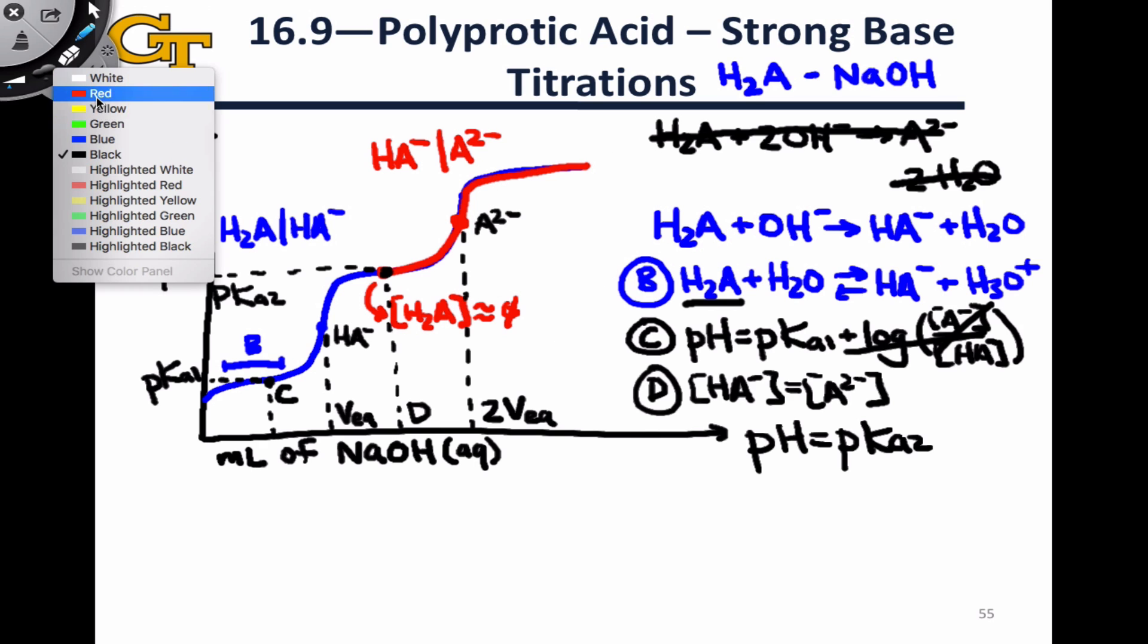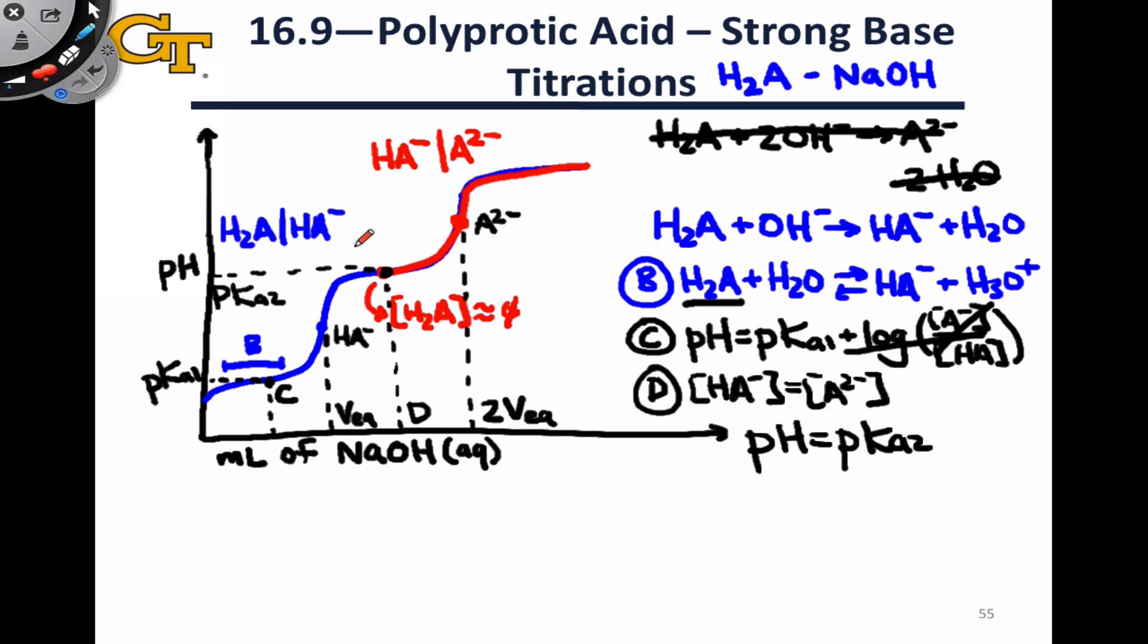One thing that I want to back up and mention briefly is that in this region that looks like a second buffer region, which it absolutely is, let's call it B2 for the second buffer region, in the B2 region, we're dealing with a buffer, but now the reaction is different. We're talking about acid dissociation of the second proton, acid dissociation of the conjugate base to form still hydronium, but now A2-, the conjugate base of HA-.